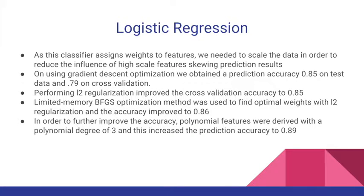For logistic regression, since the classifier assigns weights to features, we scaled the data to reduce the influence of high-scale features on prediction results using gradient descent optimization. We obtained a prediction accuracy of 85% on test data and 79% on cross-validation. Performing L2 regularization improved cross-validation accuracy to 85%. Using the limited-memory BFGS optimization method with L2 regularization improved accuracy to 86%. Deriving polynomial features with degree 3 increased prediction accuracy to 85%.